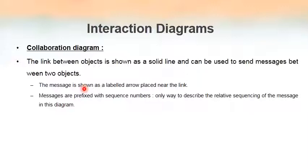In a collaboration diagram, we do not read from top to bottom. To know the order in which messaging took place, we write message numbers along with the message labels. In sequence diagrams, the topmost message is the first, then second, then third — the order is clear. But in a collaboration diagram, we cannot identify order visually, so each message is prefixed with a sequence number like 1, 2, 3 to indicate the order of messaging.